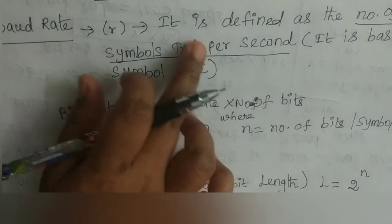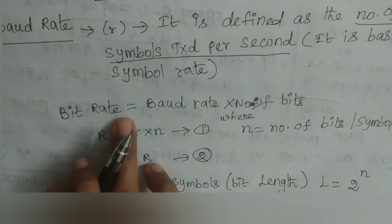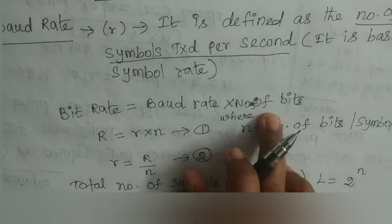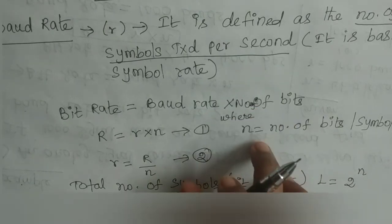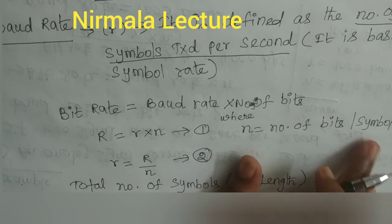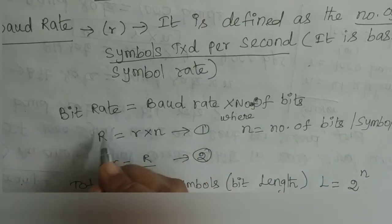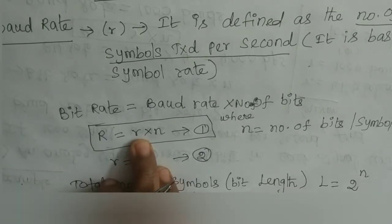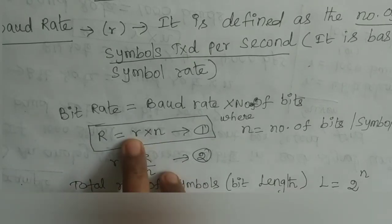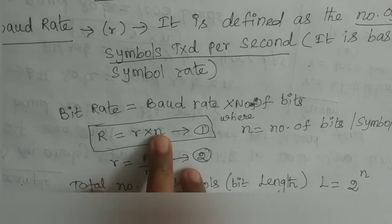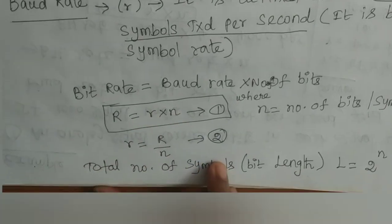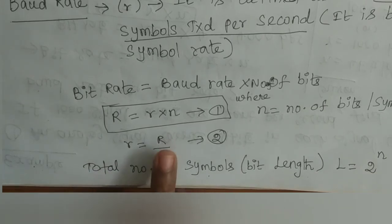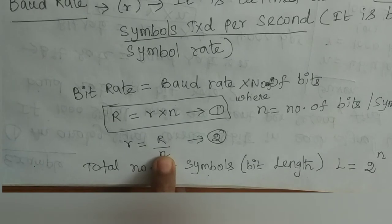We can derive the relation between bit rate and baud rate. Bit rate capital R is equal to baud rate small r into n, where n is the number of bits per symbol. We can also write: baud rate r is equal to capital R divided by n, that is bit rate divided by number of bits per symbol.